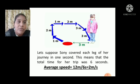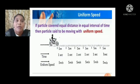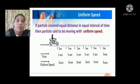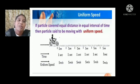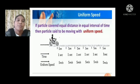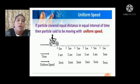The next topic is uniform speed. If a particle covers equal distance in equal intervals of time, then the particle is said to be moving with uniform speed. If you look into this picture, a motorbike is covering the same distance — 5 meters — for every one second. So the motorbike is covering equal distance in equal intervals of time, and this is nothing but uniform speed.